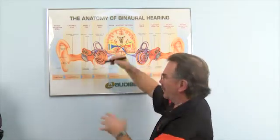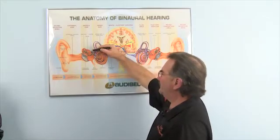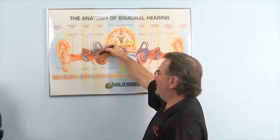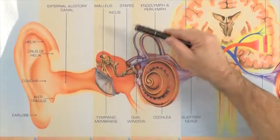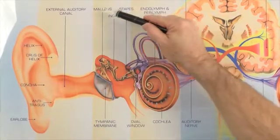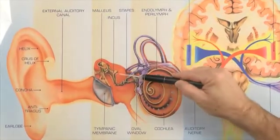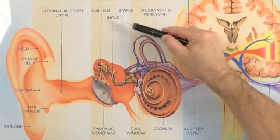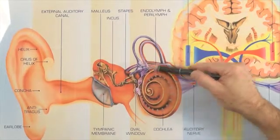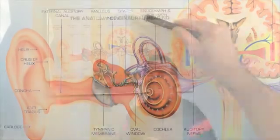As the eardrum vibrates, there is a bone attached to it in your middle ear called your malleus bone. Then there's a bone attached to the malleus called your incus, and one attached to the incus called your stapes. You might know them as the hammer, the anvil, and the stirrup. They're also known as ossicles, and this is your ossicular chain.